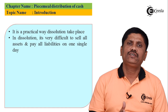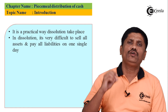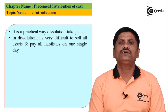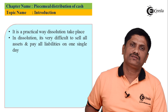After settling secured creditors, we pay unsecured creditors. Unsecured creditors are those against whom no asset has been pledged — typically trade creditors and bills payable. We get credit as a business policy, no asset is mortgaged against them. These are paid next, after secured creditors.